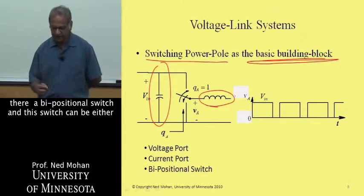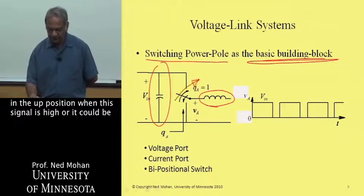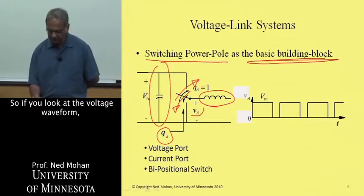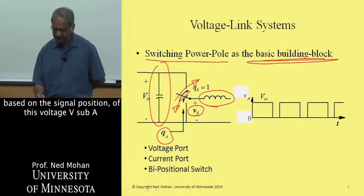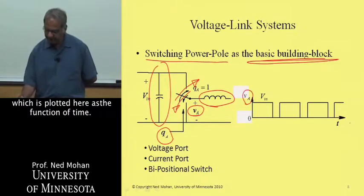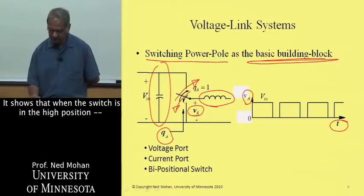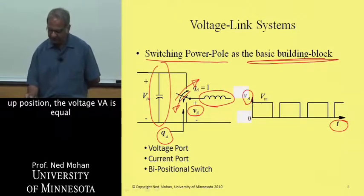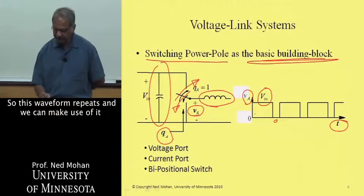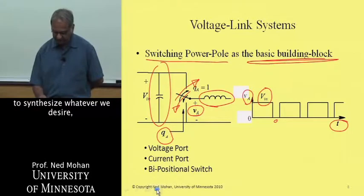And this switch can be either in the up position when this signal is high, or it could be in the down position when the signal goes low. So if you look at the voltage waveform based on the signal position of this voltage V sub A, which is plotted here as a function of time, it shows that when the switch is in the high position, up position, the voltage VA is equal to VN, otherwise it's zero. So this waveform repeats, and we can make use of it to synthesize whatever we desire.